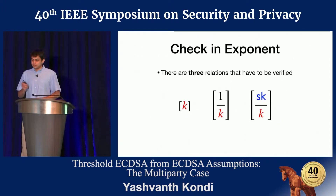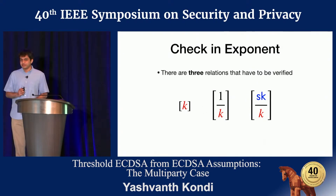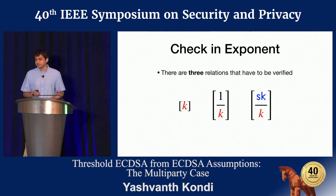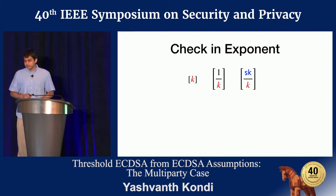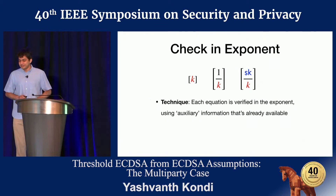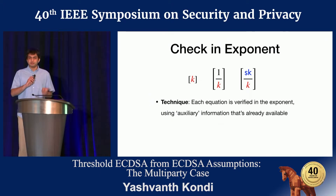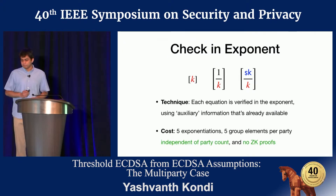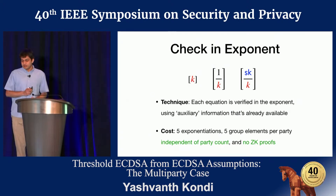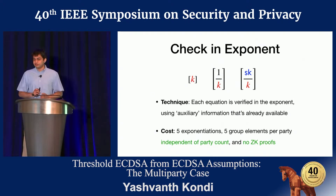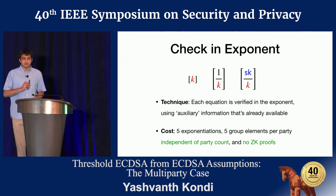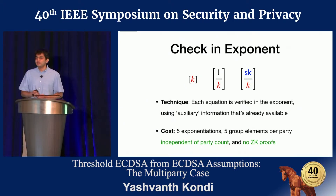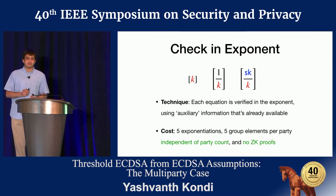At a high level, there are three relations that need to be verified: candidate shares of the instance key K, its inverse, and its inverse multiplied by the secret key. The technique at a high level is to verify each equation in the exponent — each relation between these three values — using auxiliary information already available to the world. The cost is about five exponentiations and as many group elements per party, independent of party count, with no generic zero knowledge used.